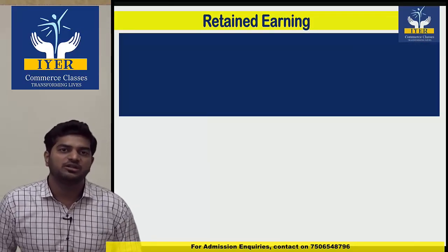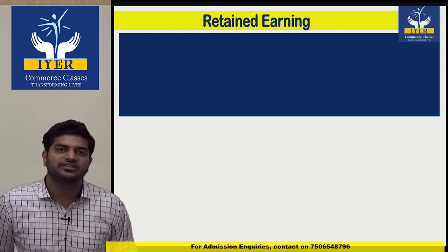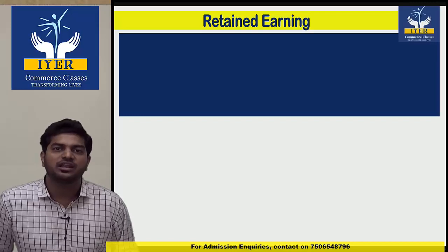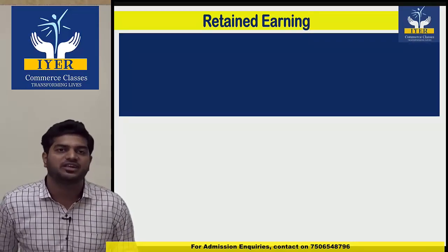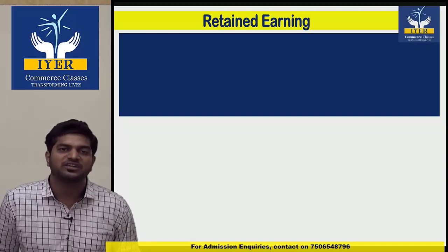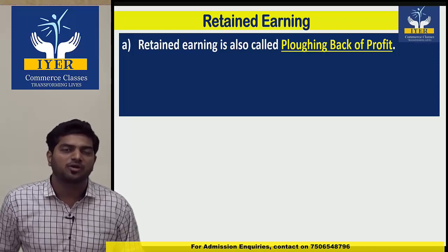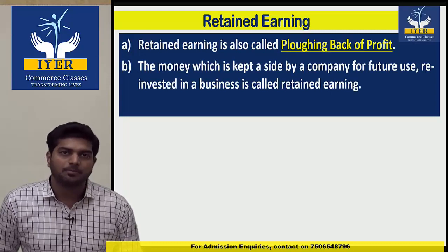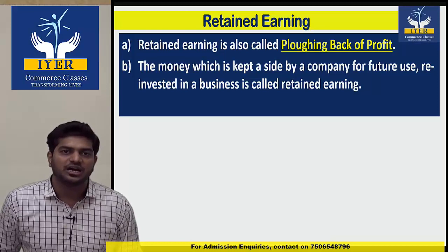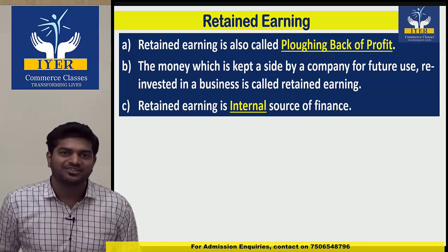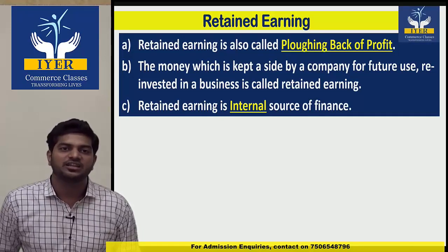Next is retained earning. Just like individuals do saving and use it when needed in the future, businesses also save — and in business, saving is called reserves. When the company keeps money aside in reserves and later reinvests it back into the business, the entire process is called retained earning. Retained earning is also called 'ploughing back of profit.' The money kept aside by a company for future use which is reinvested in the business is retained earning. It is an internal source of finance.